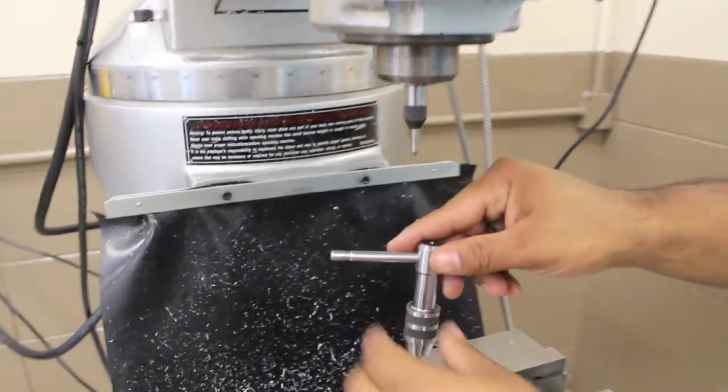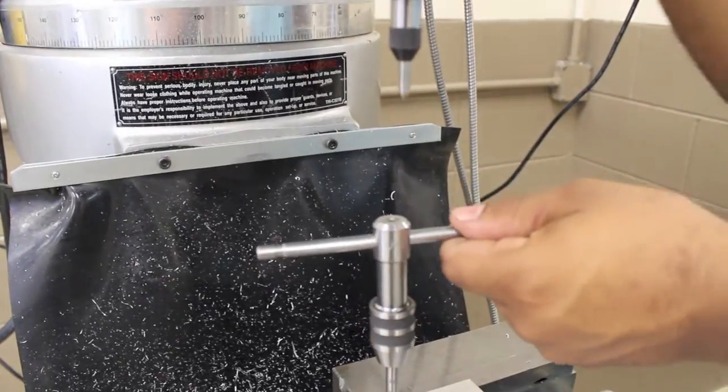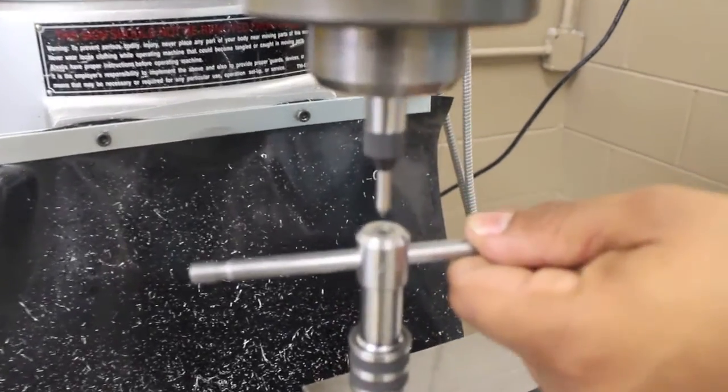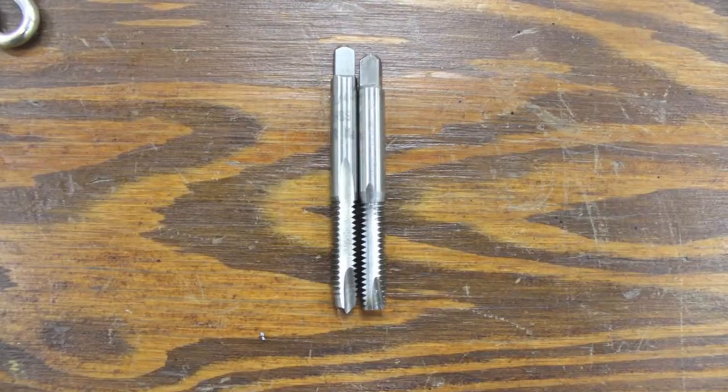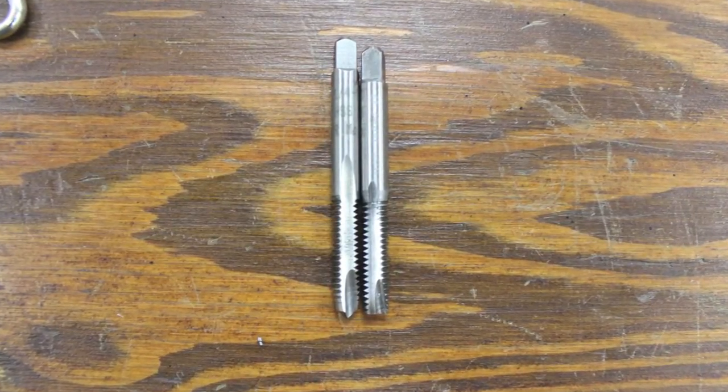When a hole needs internal threads, a tap is used to cut the needed threads. Taps are hardened tools that have the size and shape of a specific thread pitch and diameter.